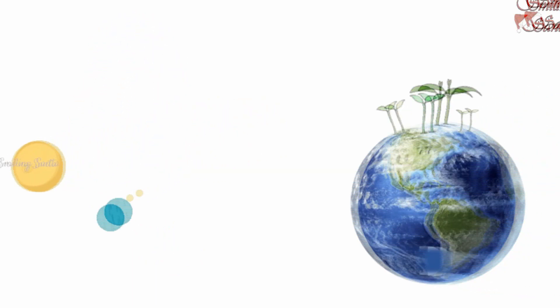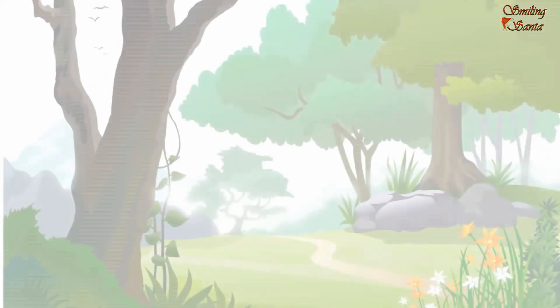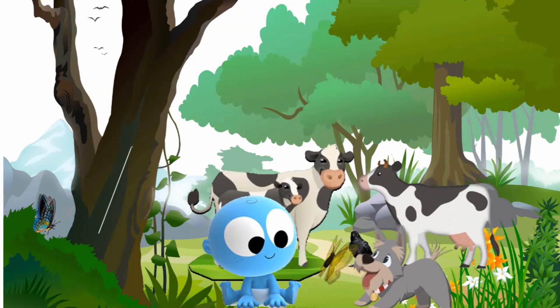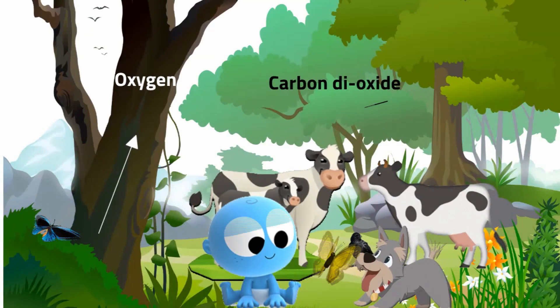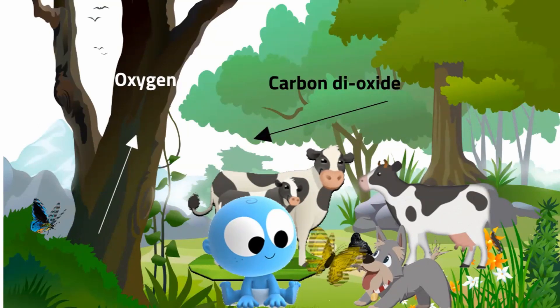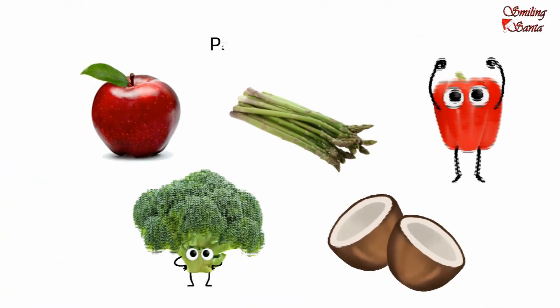Plants are really important for all living things and for our planet Earth. They give us so many things. All living things directly or indirectly depend on plants. Plants produce oxygen and absorb carbon dioxide which humans and animals need to breathe. Plants keep the air fresh and clean.